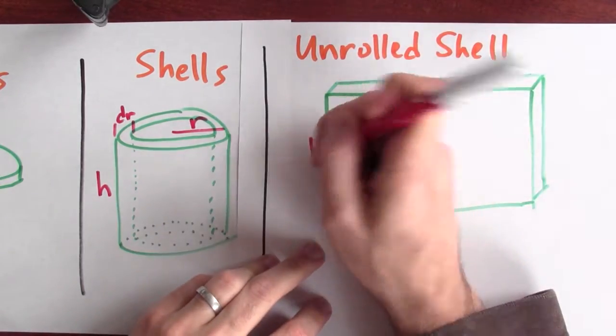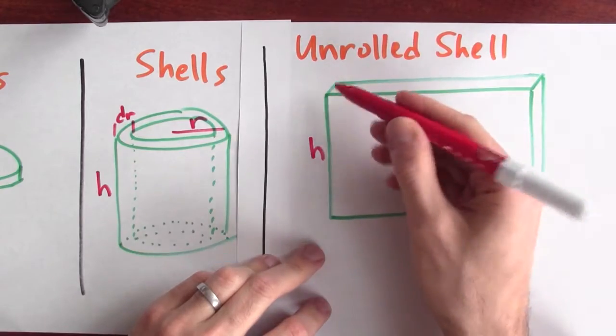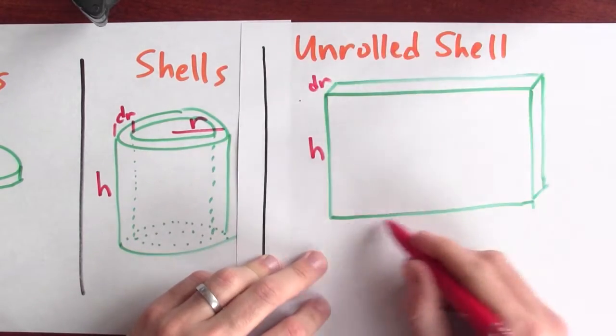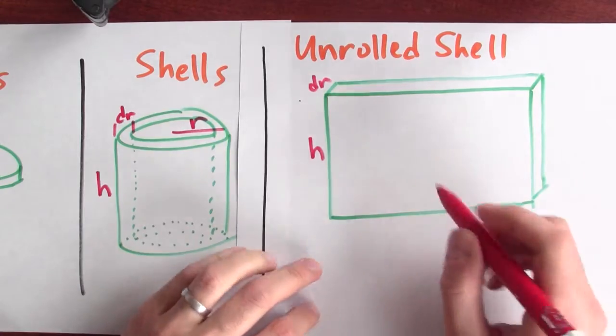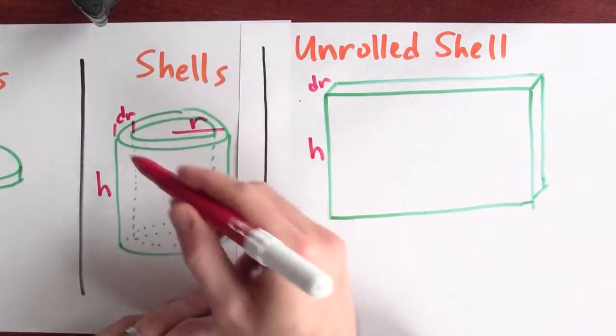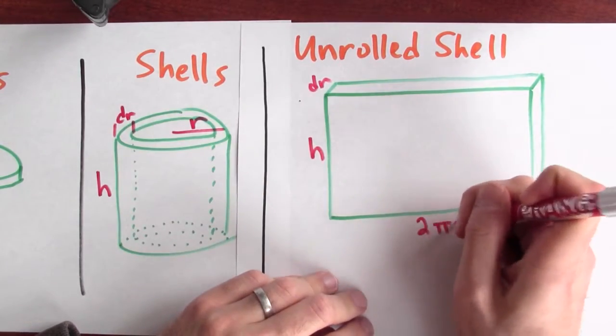Well, the slab's height is still h. The thickness of this slab is dr. And how long is this slab? Well, the slab's as long as the circumference of this circle, which is 2πr.